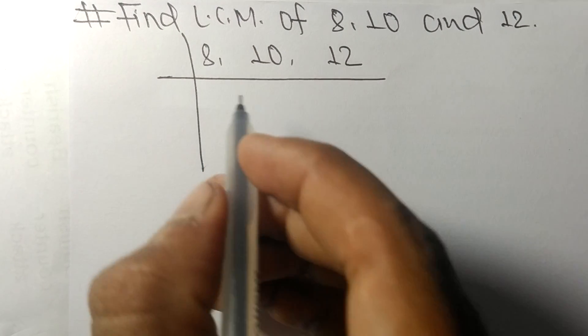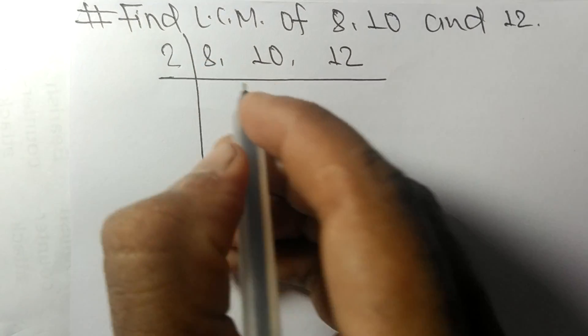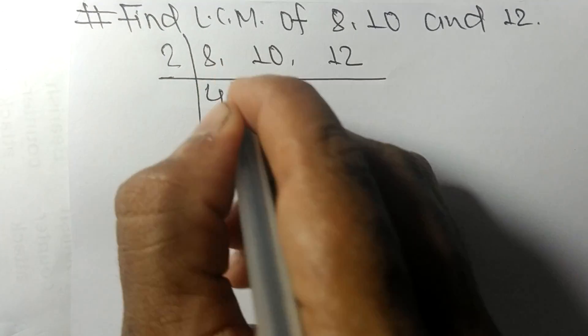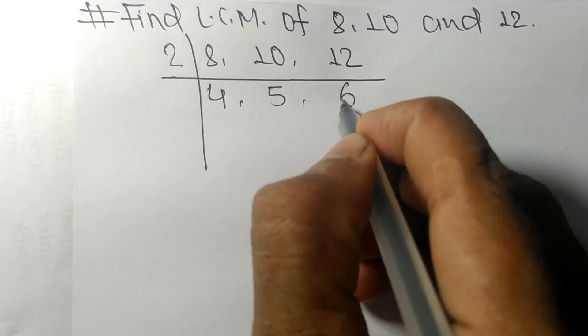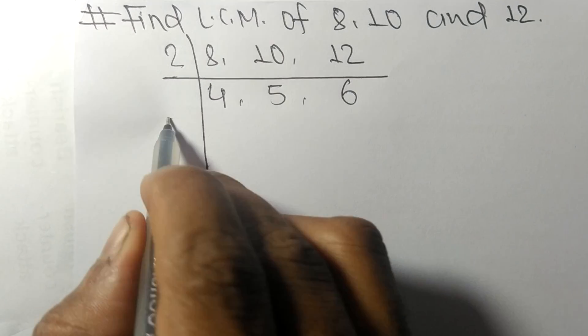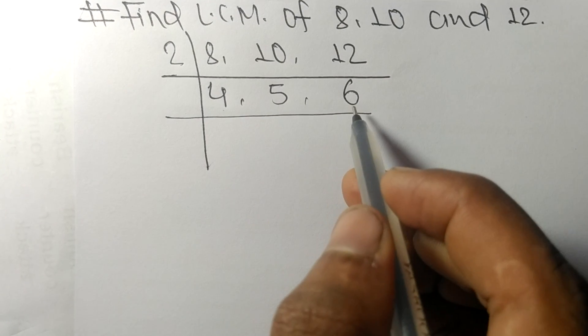So these all numbers are divisible by 2. 2 times 4 means 8, 2 times 5 means 10, 2 times 6 means 12. So now we got 4, 5 and 6.